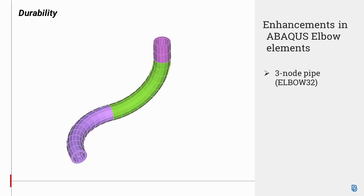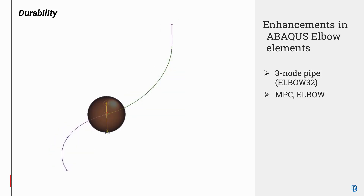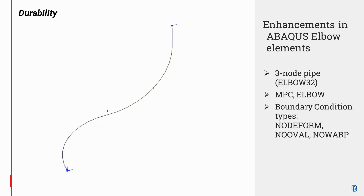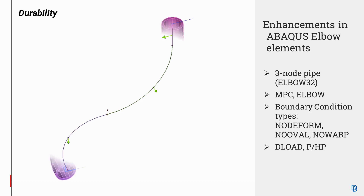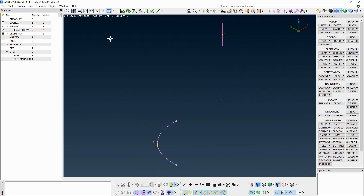Welcome. This video demonstrates generation and setup of ELBOW32 elements for Abaqus. ELBOW32 elements with different sectional properties may be connected with a specific MPC elbow-type constraint. Boundary conditions for deformation, ovalization, and warping, as well as pressure and hydrostatic pressure loads, can now be defined to complement the ELBOW32 element usage.